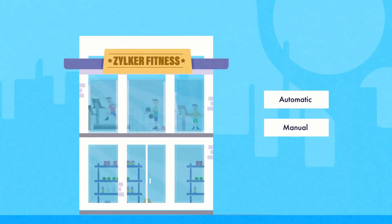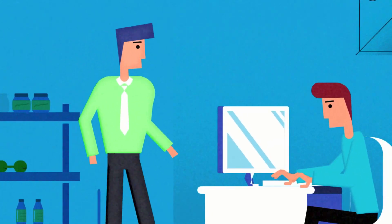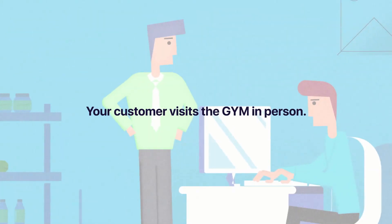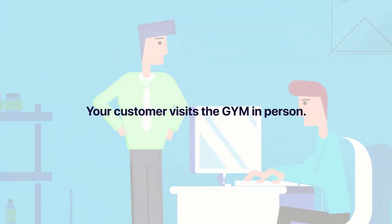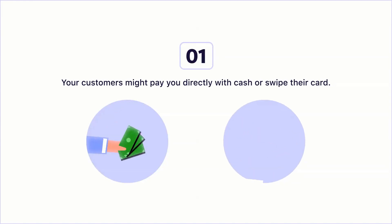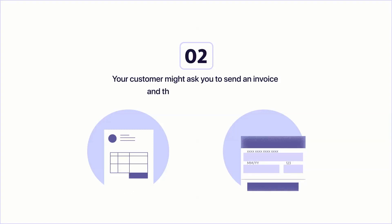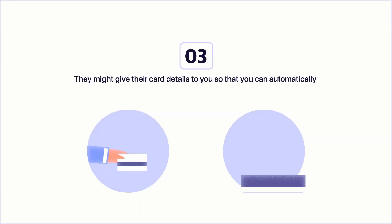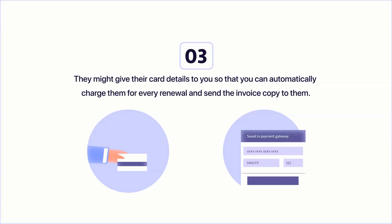Or manual, where they can come directly to your gym and you can onboard them. In this video, let's see how you can create subscriptions when your customers visit your gym directly. Here we have three different scenarios: your customer might pay you directly with cash or swipe their card; your customer might ask you to send an invoice and they will pay you online; or they might give their card details to you so that you can automatically charge them for every renewal and send the invoice copy to them. Let's take a look at each of these scenarios.